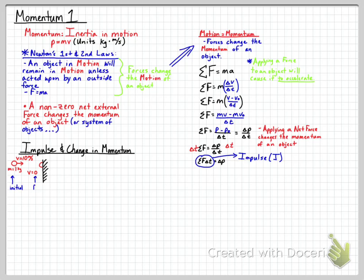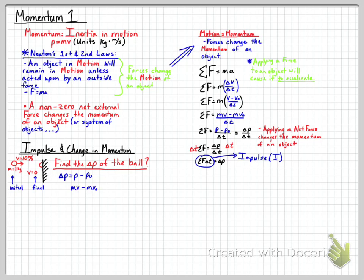We have one object — a mass of one kilogram. When it hit the wall it didn't lose any mass, so it's still one kilogram, but it has two different velocities. To find the change in momentum: delta-P equals final momentum minus initial momentum, written as mass times final velocity minus mass times initial velocity. That is 1 kg × 0 minus 1 kg × 10, giving us a change in momentum of negative 10 kilogram meters per second. The ball lost momentum.